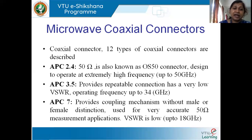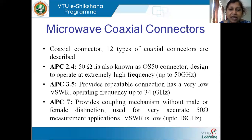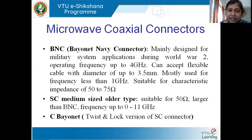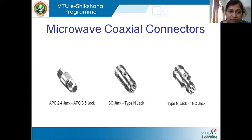Coming to the next connector, it is APC 7. Again it falls in the same category — only the diameter and physical structure change. It mainly provides a coupling mechanism without a male or female distinction; it can couple either male or female. It has very accurate measurements for 50 ohm characteristic impedance, and the VSWR is again very low. It can work up to a frequency of 18 gigahertz. The APC 2.4 and APC 3.5 jacks look like this — depending on the diameter used, the coaxial connector names change.